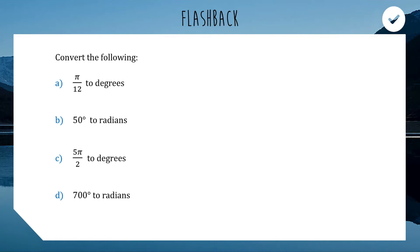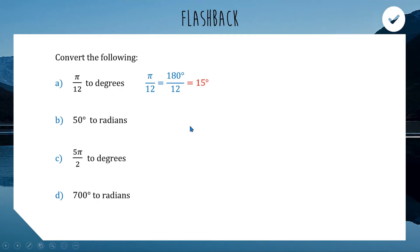If you need a refresher, you can watch and learn as I go through them right now. First thing: π/12 to degrees. Keep in mind that whenever we see π in radians, that represents 180 degrees. So π divided by 12 — we can just do 180 divided by 12 — gets us an answer of 15 degrees.